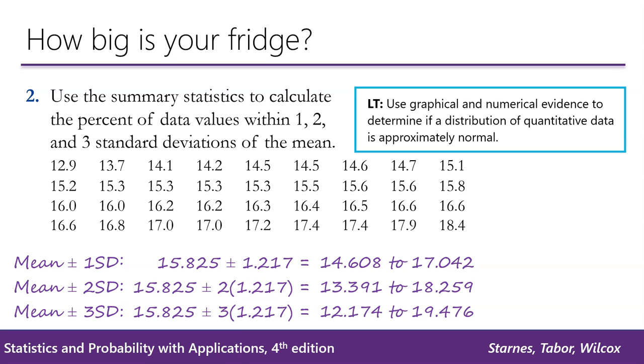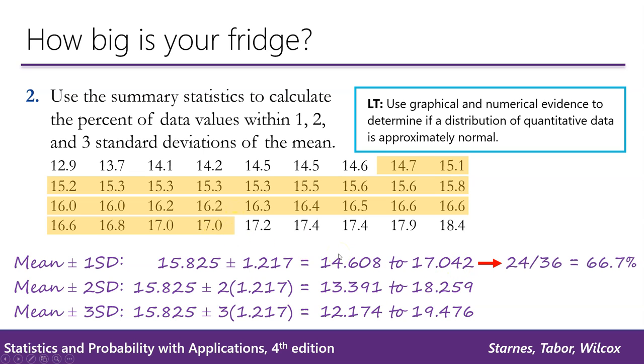Next, we need to determine the percent of data values that fall within 1, 2, and 3 standard deviations of the mean. So by marking in the data set where 14.608 would fall, right here, and where 17.042 would fall, right here, we can determine there are 24 out of 36 data values that fall within 1 standard deviation of the mean.